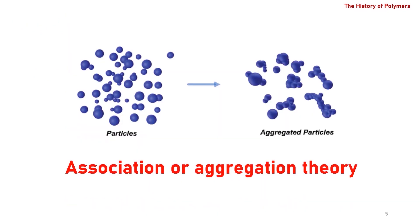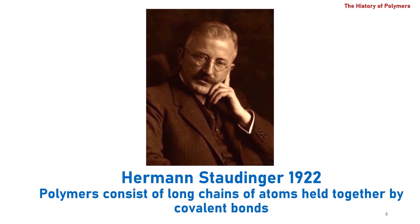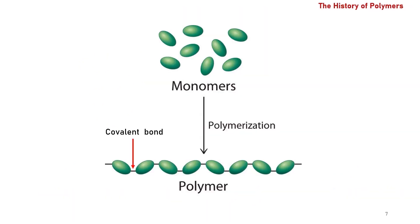Although there were significant advances in polymer and plastic synthesis, the molecular nature of polymers wasn't understood. It was believed that polymers are formed according to association theory, due to association or aggregation of molecules into polymers. It wasn't until Hermann Staudinger proposed in 1922 that polymers consist of long chains of atoms held together by covalent bonds. And even then, his work wasn't accepted until the year 1953, when he was awarded the Nobel Prize.